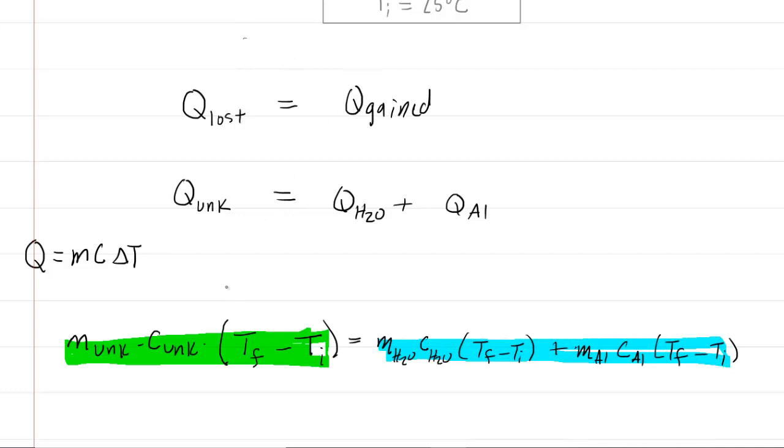How do we know this? The unknown, because it's beginning at a warmer temperature, is going to cool down. Therefore, the final temperature is going to be less than its initial temperature. Look at the structure of the equation, we're subtracting final and initial temperatures. So if you have a final temperature that's smaller than the initial, and you go to subtract these values, you're going to end up with a negative number.